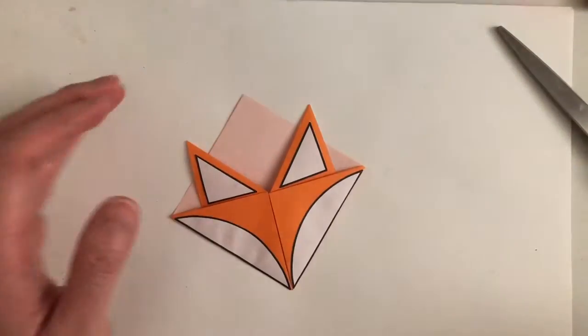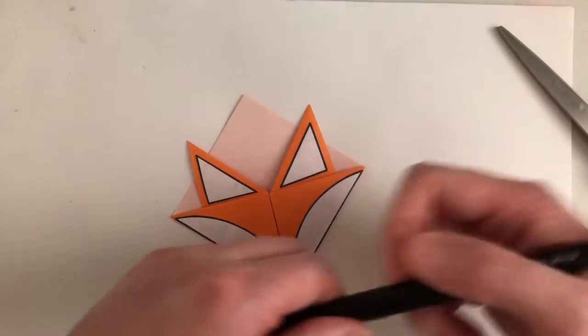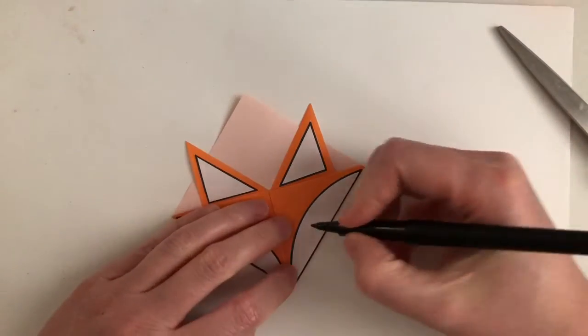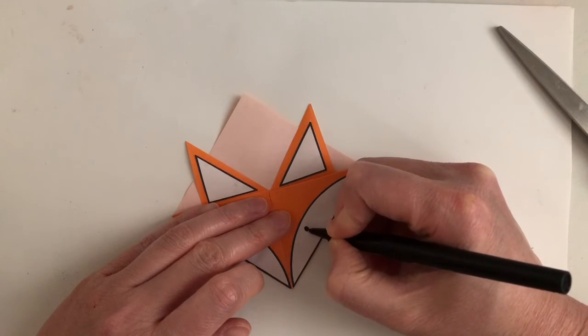We're almost done with our corner bookmark. Last thing we need to do is get our felt tip marker and draw the eyes on our fox.